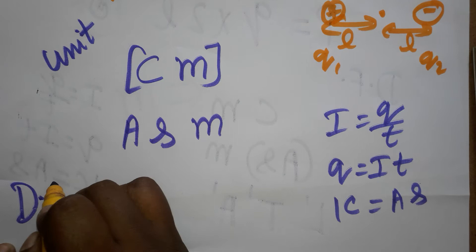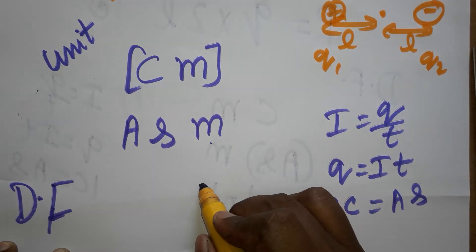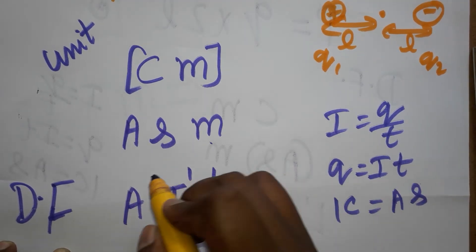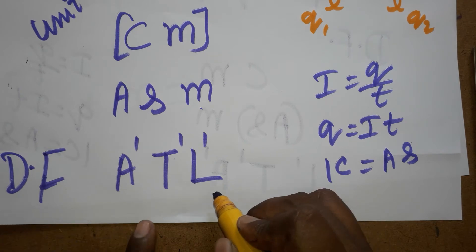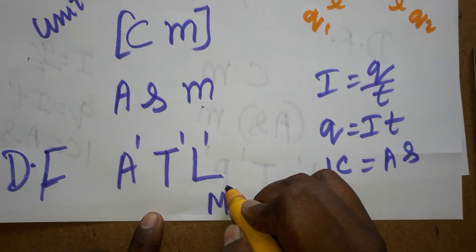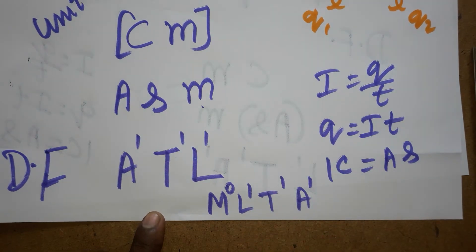Now the dimensional formula. When writing dimensional formula, length we can take as L, time as T, current as A. L power 1, T power 1, A power 1. You have to write systematically: M, L, T, A. M is not there, 0 (mass is not there), length power 1, time power 1, ampere power 1.